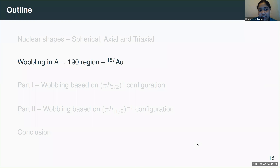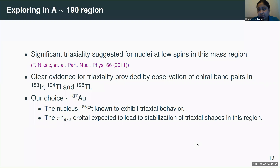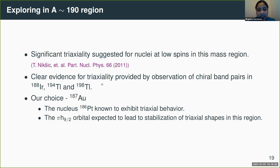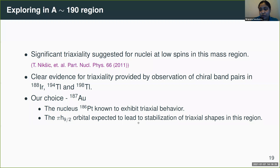We explored wobbling in the mass-190 region in the nucleus 187 gold. We chose this region because significant triaxiality has already been suggested for nuclei at low spins here, and chiral band pairs — a definite indication of triaxiality — have been observed in several nuclei in this region. Our particular nucleus of choice is 187 gold, primarily because the neighboring 186 platinum nucleus exhibits triaxial behavior, and the odd H9/2 proton orbital in this region is expected to stabilize triaxial shapes.